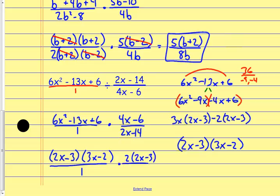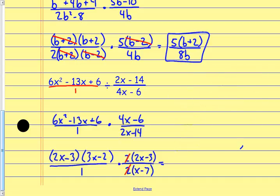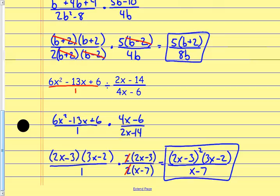Taking this back over here, that's (2x−3)(3x−2) over 1. Over here I factor out 2, leaving (2x−3). In the denominator I factor out 2 as well, leaving (x−7). I start canceling — the twos cancel, and that's about it. In my numerator I have two (2x−3)s, so I write that as (2x−3)², times (3x−2). In the denominator I've got (x−7). Not much canceled out, but that's just the way it goes sometimes.